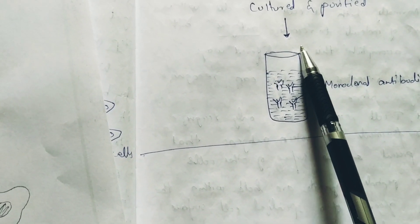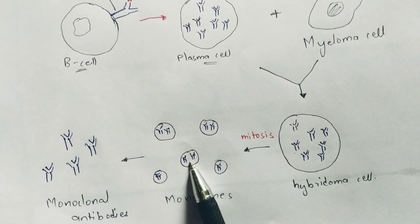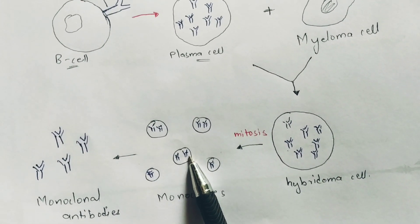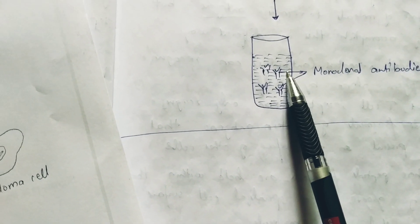Coming to the sixth step — culturing. After the culturing process, it undergoes purification. The main function of culturing and purification is to finalize the product. The daughter individuals which have been released out will get cultured and purified. These will be the monoclonal antibodies which will be present, and those monoclonal antibodies will be extracted out. Within the monoclonals, antibodies will be present, and those antibodies are extracted out — these are the extracted antibodies associated with monoclonal antibodies.